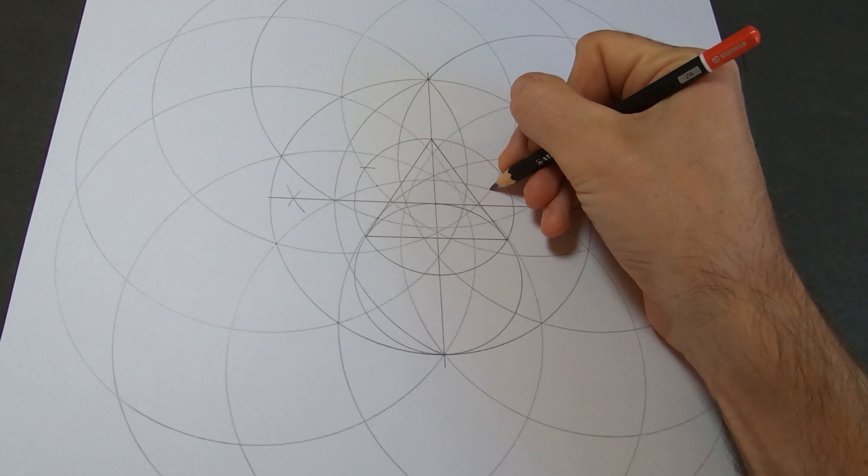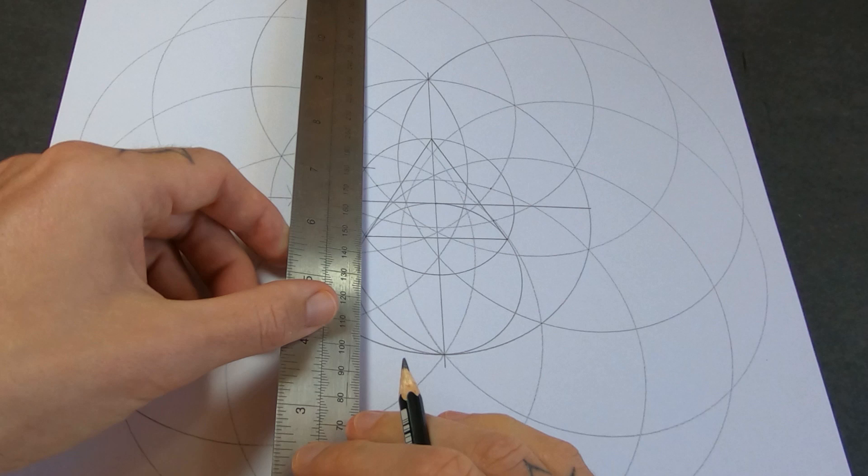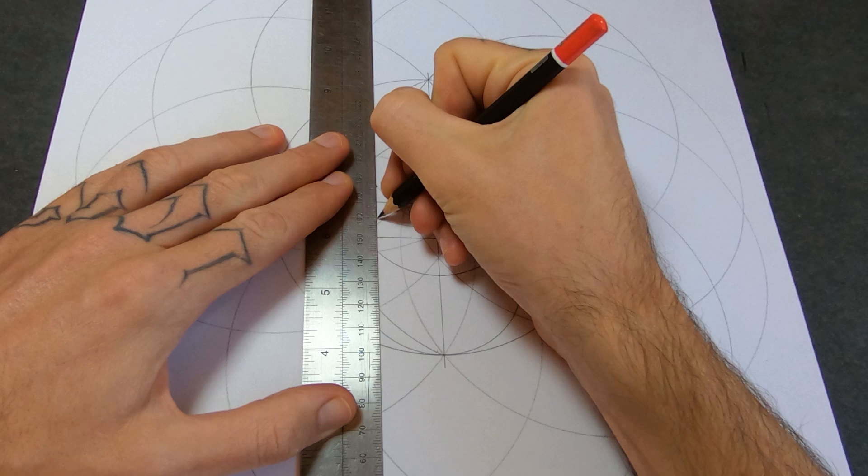So we're going to use these points by connecting these and drawing a line that goes all the way through the big circle, the big middle circle. The point where that line crosses the circle is going to be the point where we need to draw our next 5 circles.